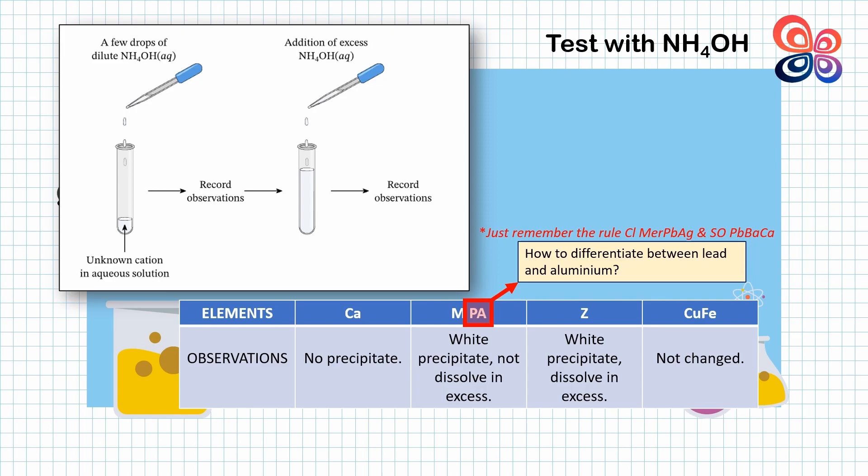For example, react the lead 2 oxide or aluminium oxide with sodium chloride. The final product of lead 2 chloride or aluminium chloride is formed. Here, lead 2 chloride is insoluble and aluminium chloride is soluble.